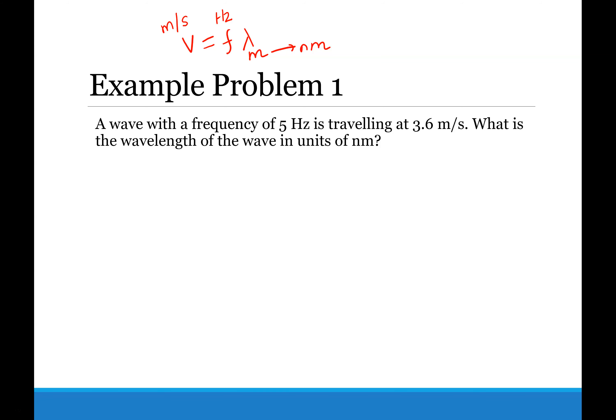So it says that we have a frequency of 5 hertz, so f equals 5.0 Hz. Traveling, which means that's a velocity, at 3.6 meters per second. What is the wavelength in units of nanometers? So we are looking for the wavelength.